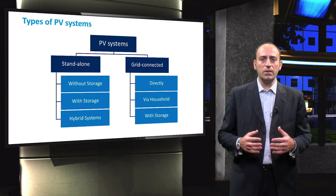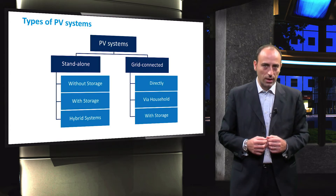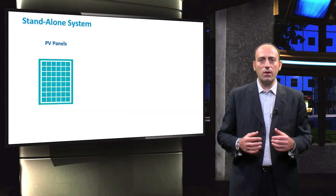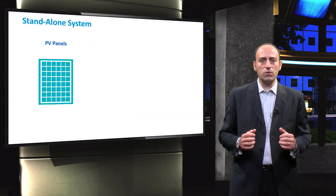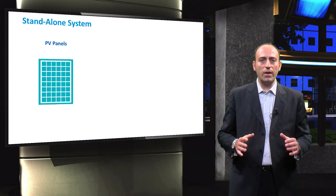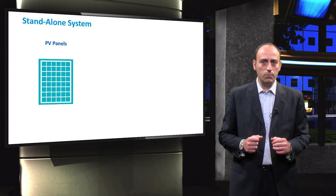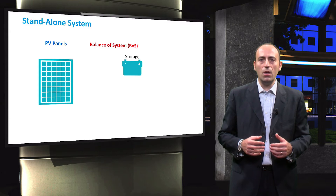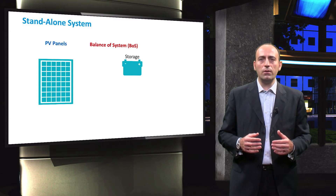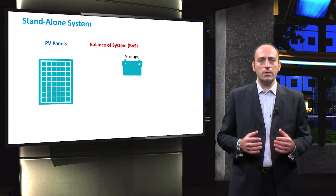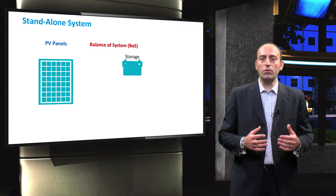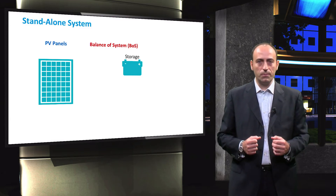Each of these categories might be further subdivided into several subcategories. A standalone PV system relies only on solar power, since it is not connected to the distribution grid. It contains a storage system, such as batteries, to store the unused solar energy. Standalone PV systems are usually installed in remote areas where the grid is absent.